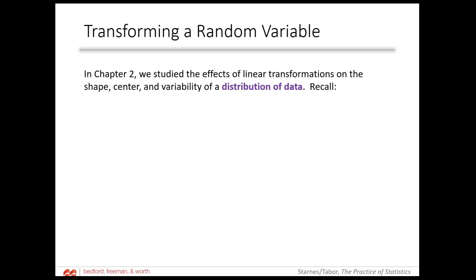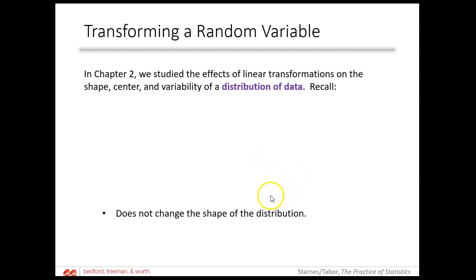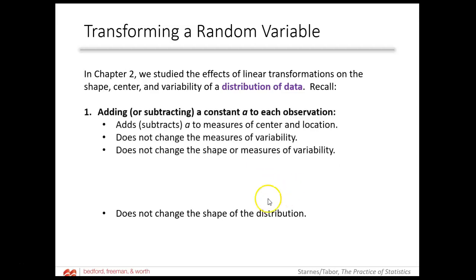So in chapter two, we talked about how we could perform linear transformations on the shape, center, and variability of our distributions. If you are adding or subtracting a constant A to every observation, that's going to add or subtract A to each of the measures of center and location. The variability does not change in any way, and the shape and any measure of variability stays the same. Big point: adding does not change the shape of the distribution.